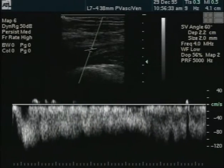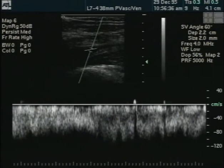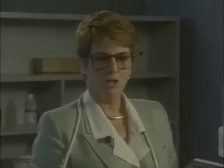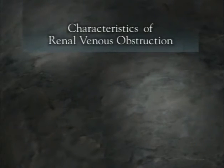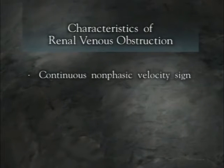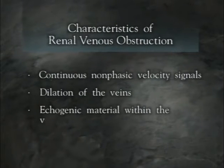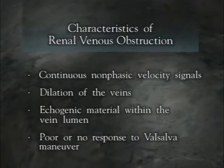In contrast, a nonphasic velocity signal will be noted in an obstructed vein. To summarize, if venous outflow from the renal system is obstructed, the diagnostic criteria used for peripheral venous obstruction apply: continuous, nonphasic velocity signals; dilation of the veins; echogenic material within the vein lumen; and poor or no response to Valsalva maneuver.